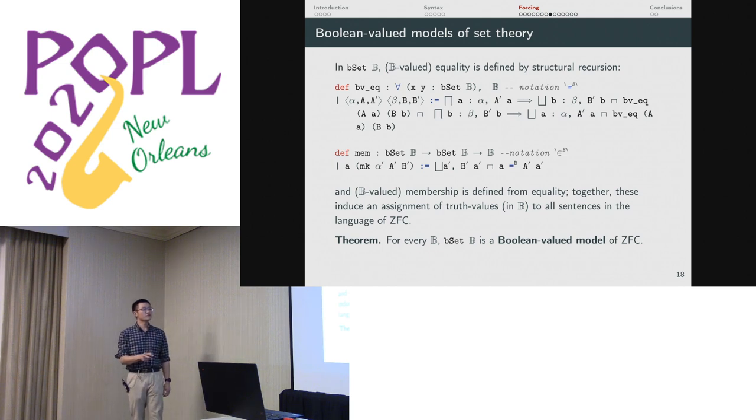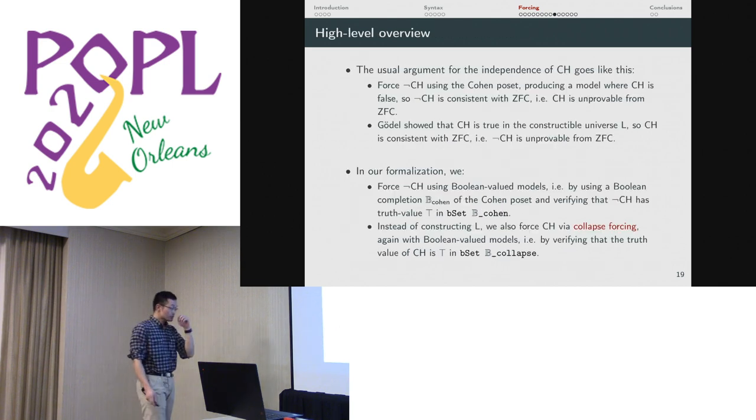The fundamental theorem of forcing for Boolean-valued models is that for every complete B, B set B is a Boolean-valued model of set theory. Here's a high level view of the proof since I don't have time to go into details. Typically you force not CH using the Cohen poset, using a filter which you show is dense somehow. And then to show CH, to force CH, well, you don't force CH. To construct a model where CH is true, you follow Gödel's proof and you just build L and you verify that CH is true now.